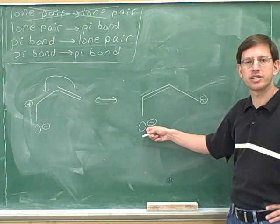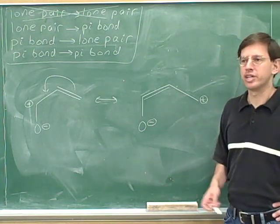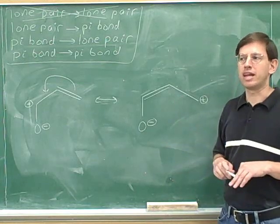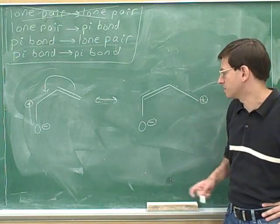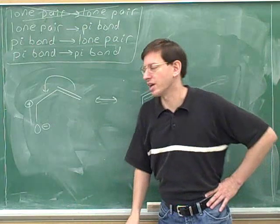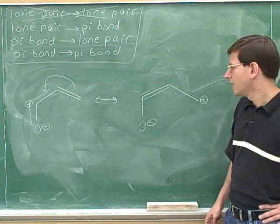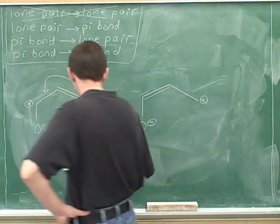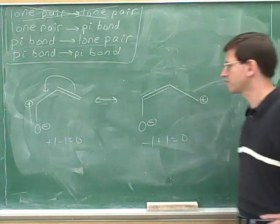How should we change the charge on this oxygen? Well, are there any arrows going to or from the oxygen? No. So should we make any changes? No. Remember that you only make the changes that are dictated by the electron-pushing arrows. Since we didn't draw any arrows around here, we should not be making any changes to the oxygen — so its charge doesn't change. The net charge in the left-hand picture is plus one minus one, which is zero. And in the right-hand picture, we have a minus one and a plus one, which is also zero. So those balance.